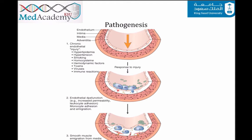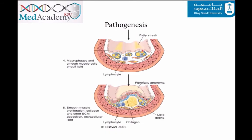Platelets and monocytes adhere to the endothelial cells, then monocytes migrate to the intima layer and differentiate into macrophages. These macrophages engulf oxidized LDL via scavenger receptors, resulting in lipid accumulation within the macrophages — now called foam cells. These foam cells form what is called fatty streaks, which become visible on the arterial surface.